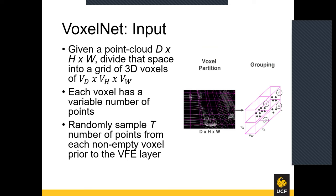For VoxelNet, given an input of shape D by H by W, we can divide that space into a grid of 3D voxels with shape VD by VH by VW. Each voxel contains a variable number of points. To utilize the data efficiently, the authors propose randomly sampling T points from each non-empty voxel prior to the VFE layer. For each point, the authors check if the corresponding voxel already exists to avoid duplicate samples using a lookup operation with a hash table where the voxel coordinate is used as the hash key. If the voxel is already initialized, the point is added if there are fewer than T points; otherwise, the point is ignored.